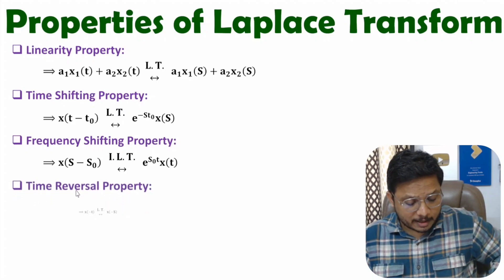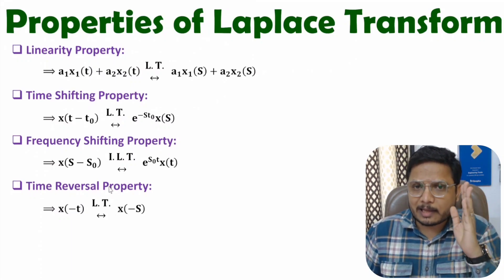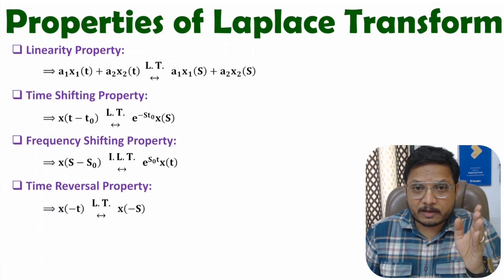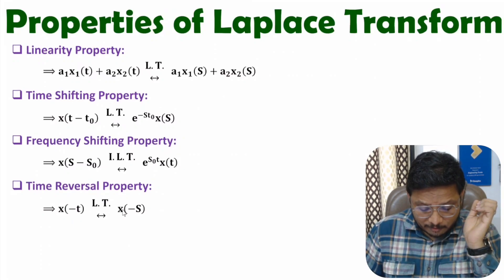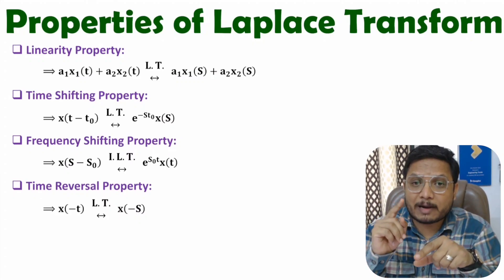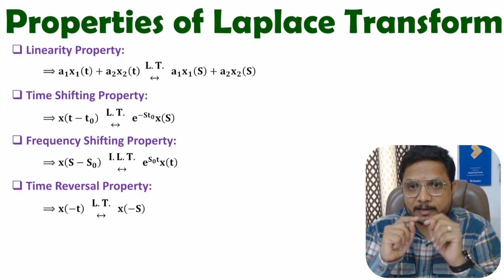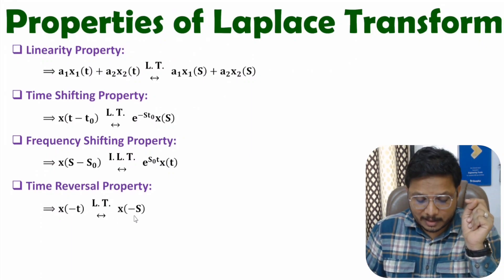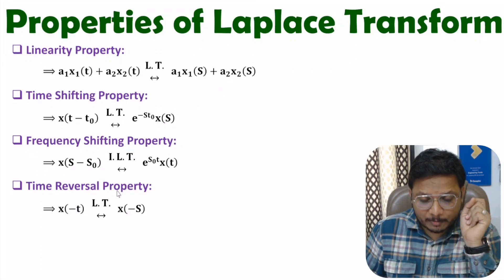Now I will discuss the time reversal property, which involves the folding operation. If we have signal x(t) whose Laplace transform is X(s), then after time folding x(t) becomes x(−t), and its Laplace transform will be X(−s). I have seen in many books there are errors — some books write that the Laplace transform of x(−t) is −X(−s), but that is only valid for odd signals. In general, the time reversal property states that the Laplace transform of x(−t) is X(−s); the negative sign applies only when the signal is an odd signal.